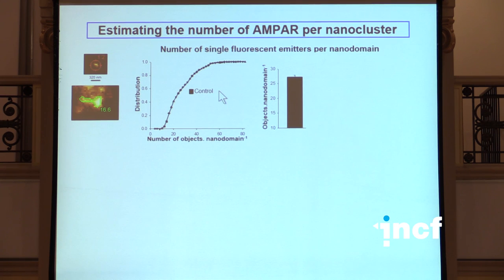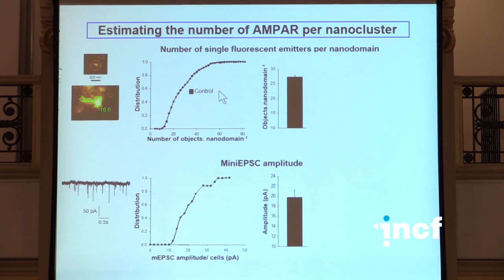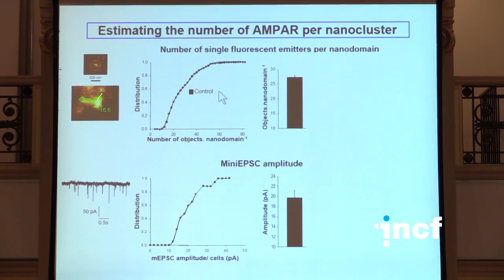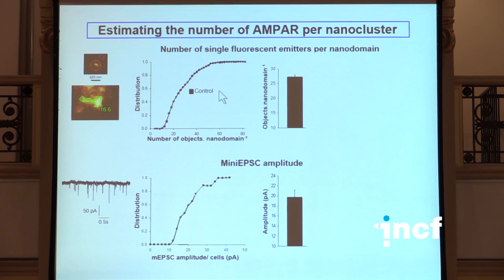What was pretty interesting is then if you compare that number to the number you get from what's called miniature excitatory post-synaptic current - that means the number of receptors that are activated by a single vesicle - you find on average in these cultures for these mini currents an amplitude of about 20 picoamps. That corresponds more or less to the same type of receptors. So there's a good correlation between the amplitude, the number of receptors activated by a single vesicle release, and the number of receptors you could have in each of these single nanoclusters.